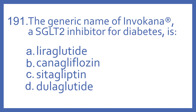Number 191: the generic name of Invokana, a SGLT2 inhibitor for diabetes, is A, liraglutide; B, canagliflozin; C, sitagliptin; or D, dulaglutide.